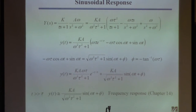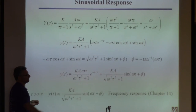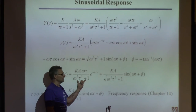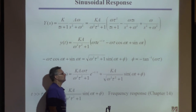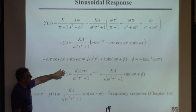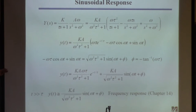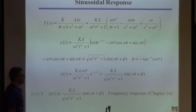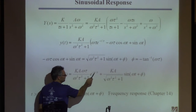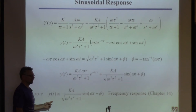If you put a sinusoid into a system, a sinusoid comes out — plus an initial exponential transient. For large t, the transient decays and you're left with just the sinusoid. Similar to the ramp problem: initially there are transients from the exponential term, then it decays and the output looks like the sinusoid. The output has the same frequency but a different amplitude and is phase shifted.